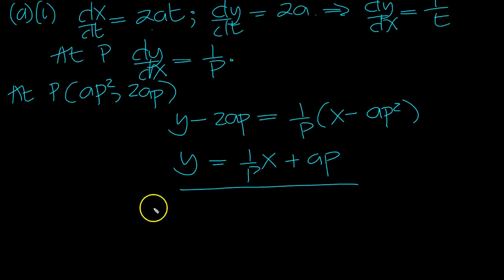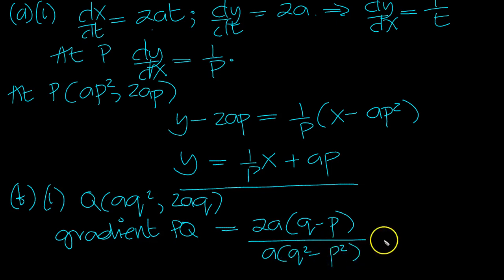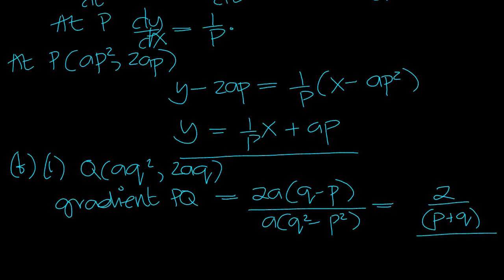Gradient of PQ. Q is equal to aQ squared, 2aQ. So, gradient of PQ is equal to 2aQ minus 2aP over aQ squared minus aP squared. The factor aQ minus P cancels from this when you factor the quadratic. So you're left with 2 over P plus Q or Q plus P, it's the same thing. Because Q minus P is a factor in here, this quadratic. So that's the gradient.